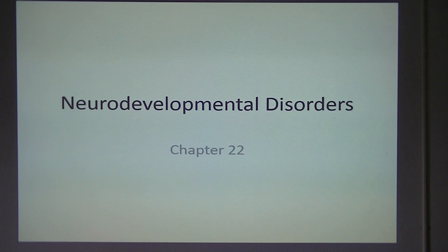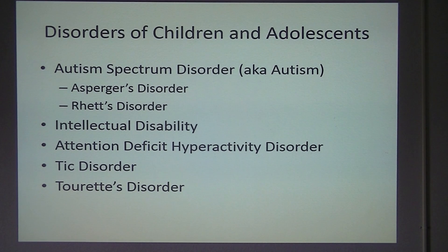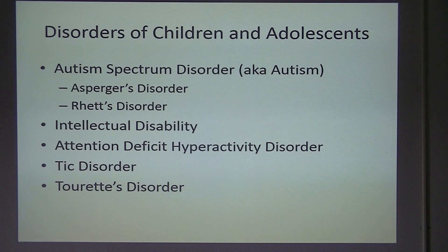Chapter 22 is on neurodevelopmental disorders, and within the new DSM-5 there have been a lot of changes, especially within the autism spectrum. Rett's disorder and Asperger's disorder used to be standalone diagnoses, but now they're diagnosed within the autism spectrum disorder. You will still see those diagnoses on medical charts, but they will eventually be diagnosed simply as autism. We'll go into those briefly so you know what they are within the autism spectrum disorder.